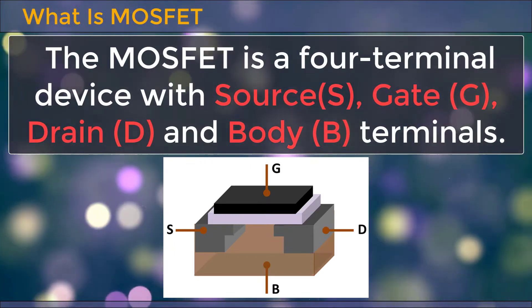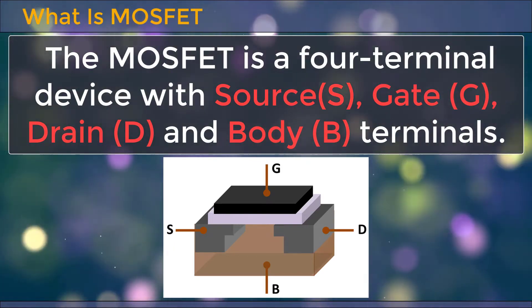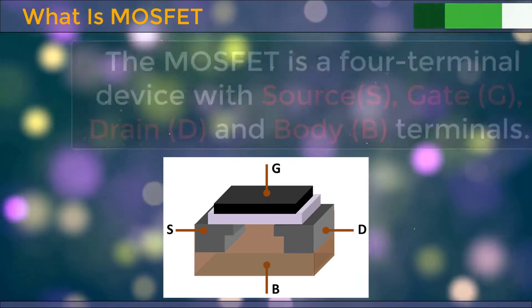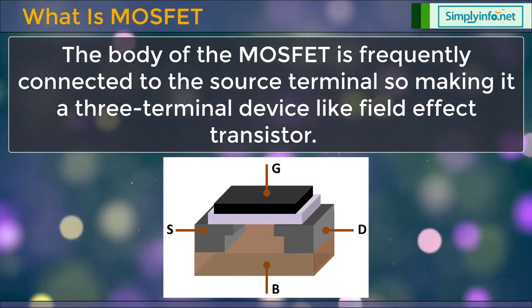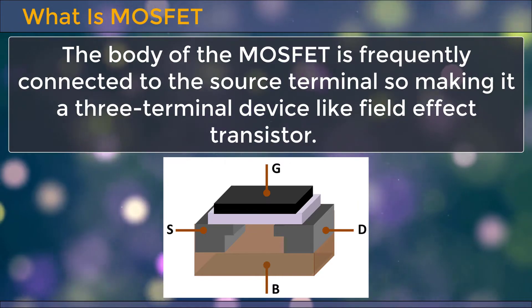The MOSFET is a four terminal device with source S, gate G, drain D, and body B terminals. The body of the MOSFET is frequently connected to the source terminal, making it a three terminal device like a field effect transistor.